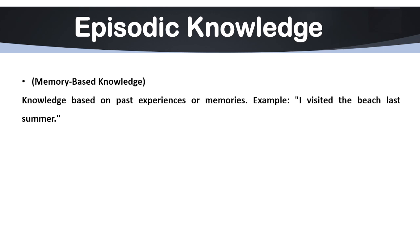Next we have episodic knowledge. Episodic knowledge is memory-based knowledge — it is knowledge based on past experiences or specific events that AI can recall when needed. It helps AI learn from past interactions to improve responses and make better decisions. For example, a virtual assistant like Siri or Alexa remembers your favorite songs and suggests them based on your past choices. AI systems use episodic knowledge in personalization, recommendation systems and adaptive learning.